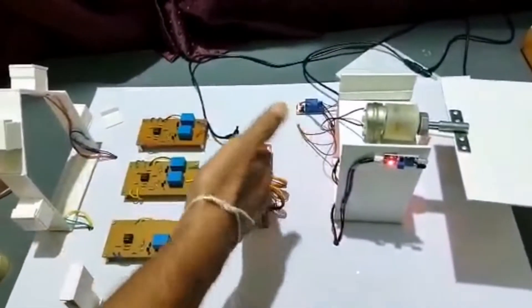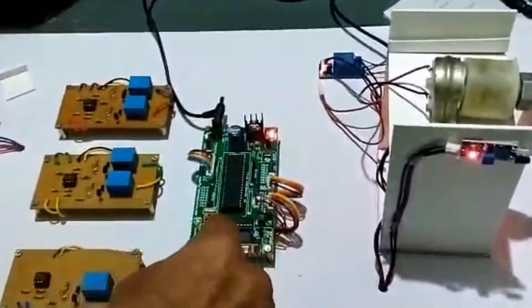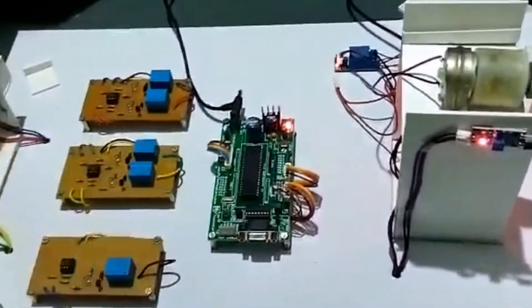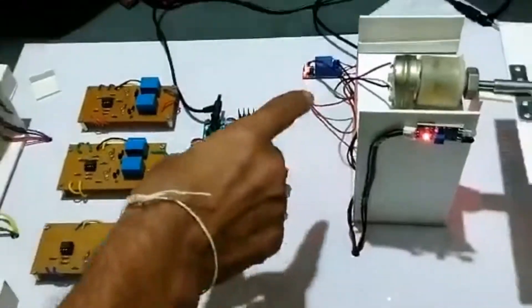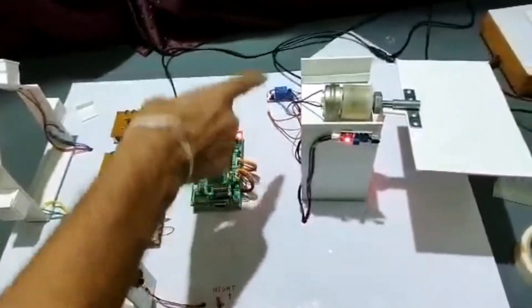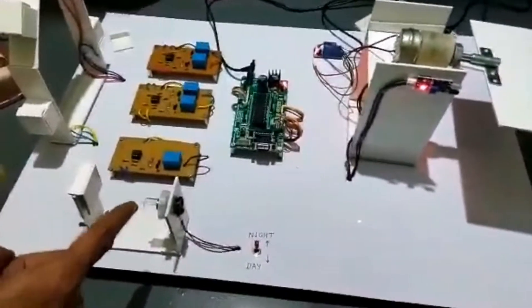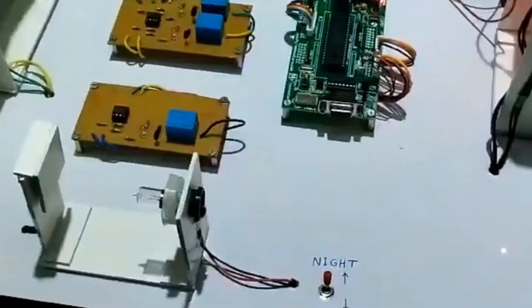And it is fed as input to the microcontroller unit. This is an 8051-based board and it controls all the activities. It drives the motor through this relay driver, and this bulb is acting as a sun.